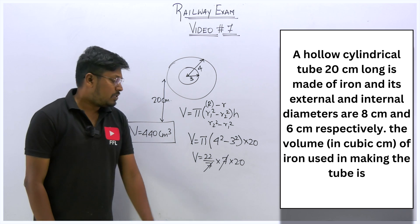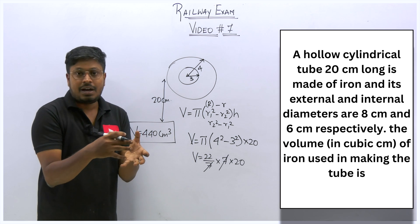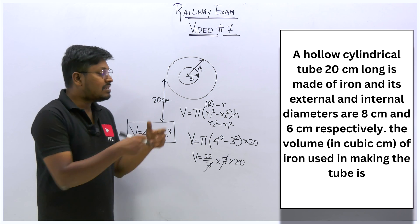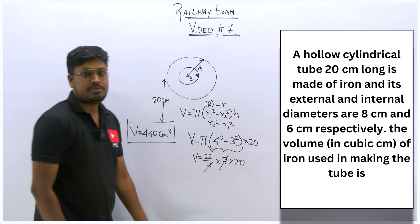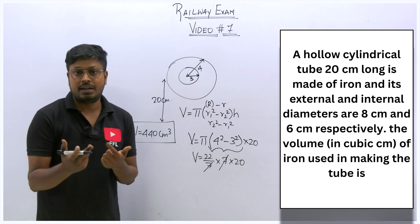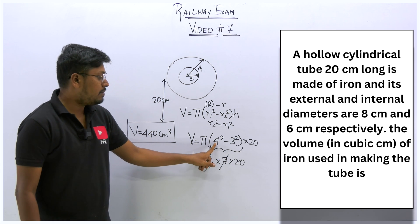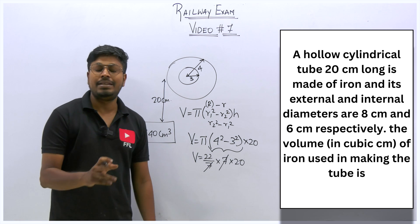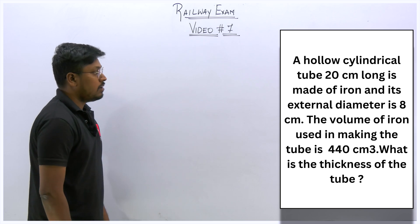Using this formula you can solve most hollow cylinder questions. Sometimes they give you the height and ask you to find the radius, or give all radii and ask for the height. Always remember: the result must not be negative — external radius is always greater than internal radius, so always subtract the smaller squared value from the larger. The answer for question 1 is 440 cm³.